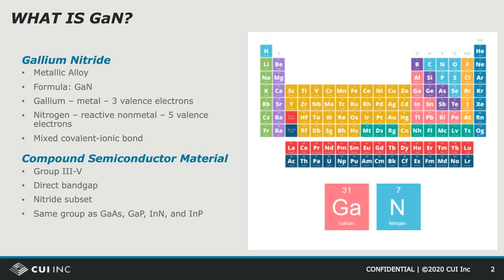Group 3-5 materials are known as direct bandgap semiconductors and are able to emit light, whereas indirect semiconductors, such as silicon, cannot. This makes semiconductors in this category potentially suitable for LED applications. Other semiconductors in the 3-5 group include gallium phosphide, which is used in LEDs; gallium arsenide, which is used in RF devices; and indium phosphide, whose applications include photovoltaics.